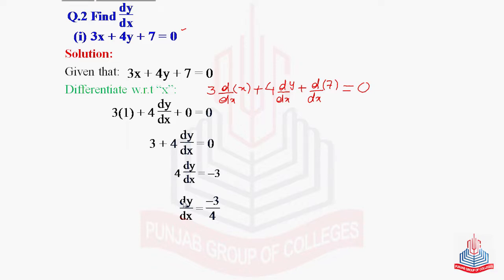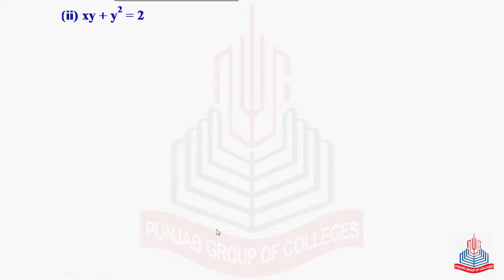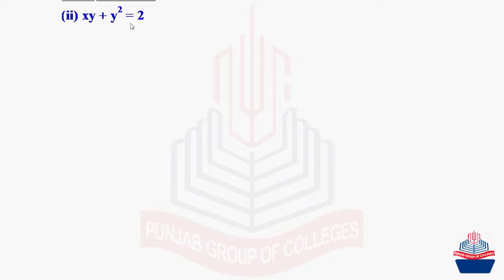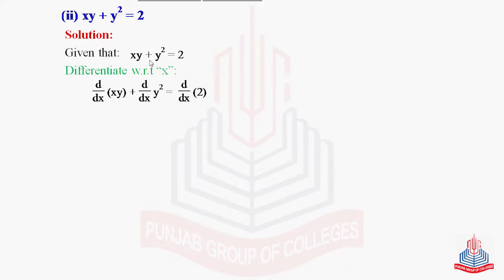This was an easy exercise to find the derivative of an implicit relation where y is not explicitly defined but there is an equation containing both x and y. Moving to part 2: find dy/dx for xy + y² = 2. Again, y is not explicitly defined in terms of x, so this is another example of implicit differentiation. Given: xy + y² = 2. Differentiating with respect to x, we apply the derivative separately to each of the three terms: d/dx(xy) + d/dx(y²) = d/dx(2).